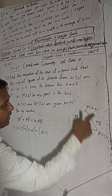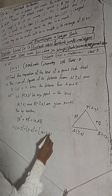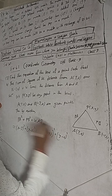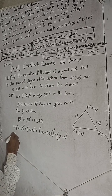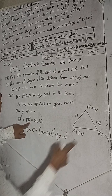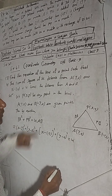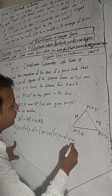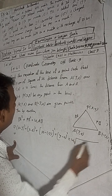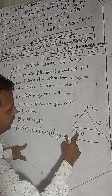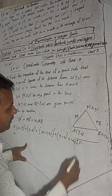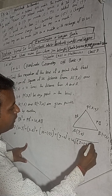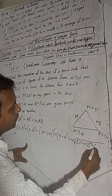And PB² is (x minus (-3)) squared plus (y minus 0) squared, which is (x+3)² + y². This equals 4 times AB. Now AB is the distance from A(3,0) to B(-3,0), which is the square root of (3 minus (-3))² plus (0 minus 0)², that is root of 6² = 6.